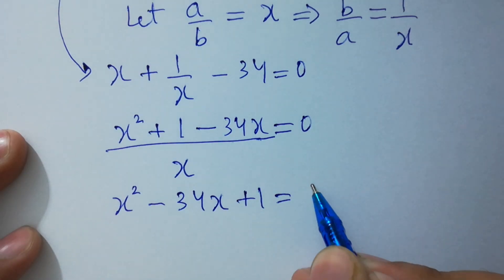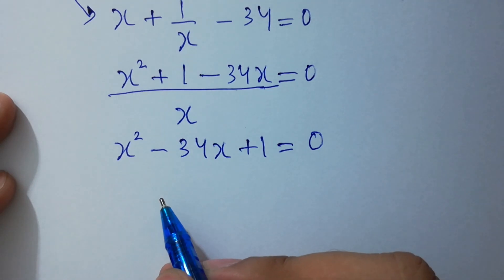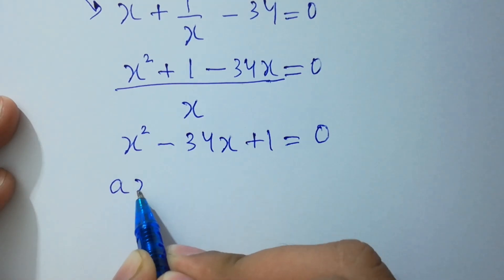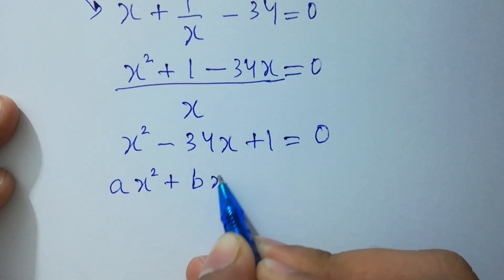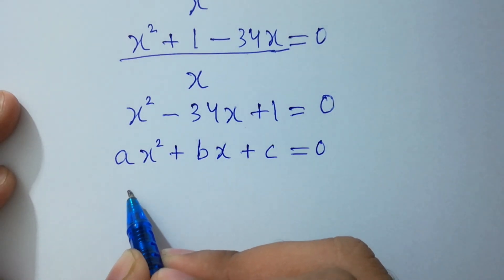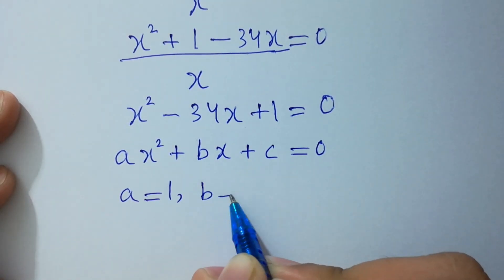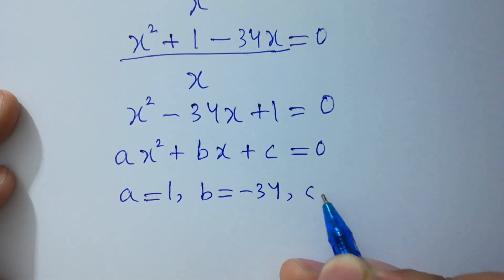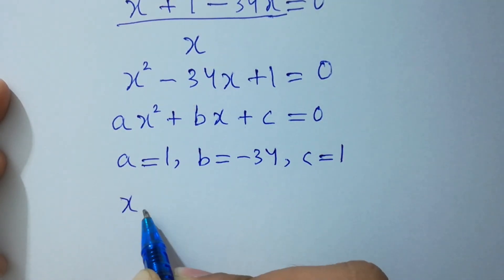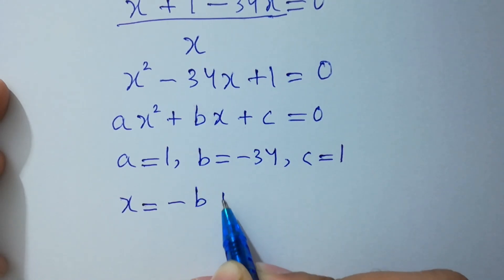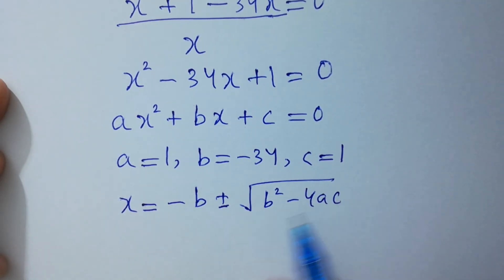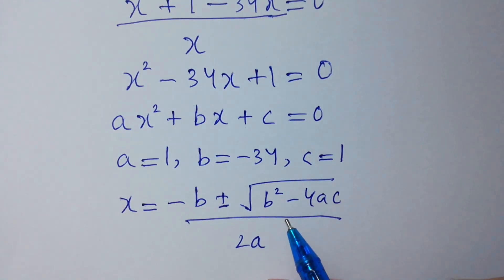Since x is positive, we have x squared minus 34x plus 1 equals 0. You can see this is a quadratic equation of the form ax squared plus bx plus c equal to 0. Comparing, a equals 1, b equals minus 34, c equals 1. Apply the quadratic formula: x equals minus b plus or minus square root of b squared minus 4ac, all over 2a.